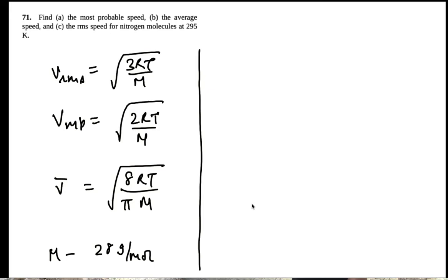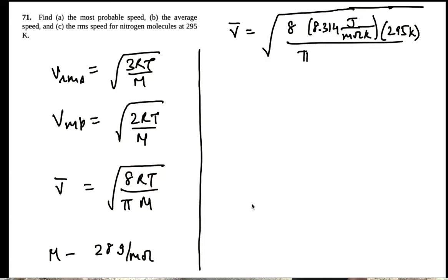Alright, so I will calculate V bar, the average speed, then calculate one other one. So 8 times 8.314 joules per mole per kelvin, temperature is 295 kelvin, pi times m which is 28 into 10 to the minus 3 kg per mole.